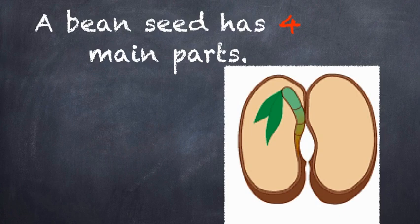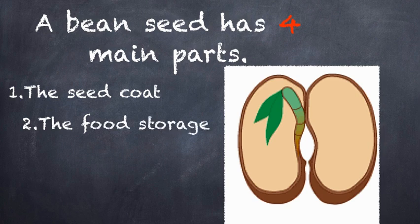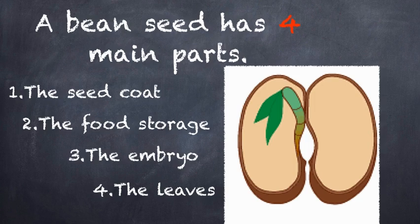A bean seed has four main parts. The seed coat, the food storage, the embryo, and the leaves.